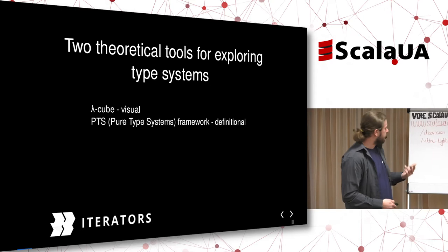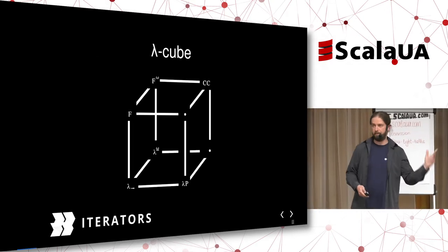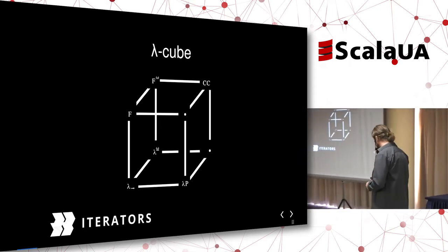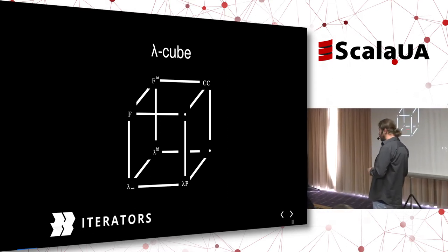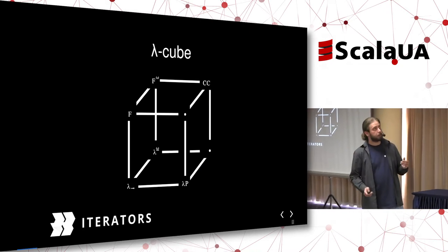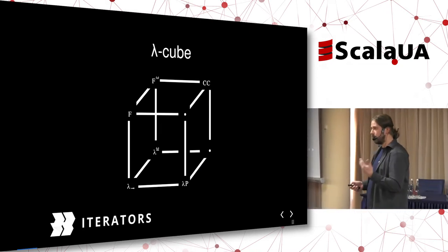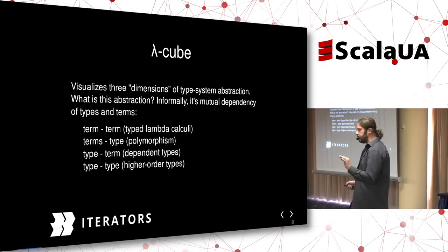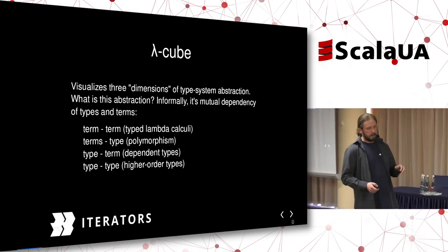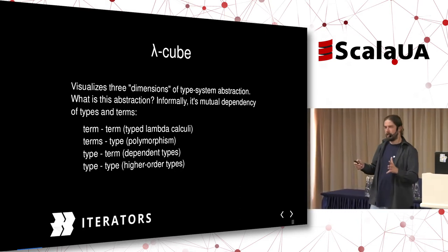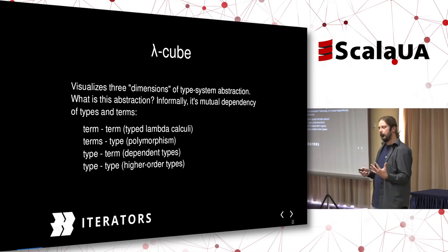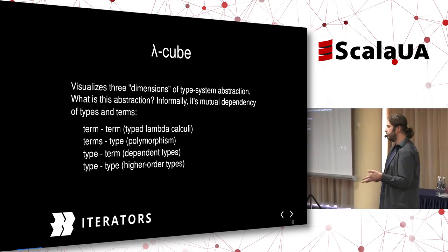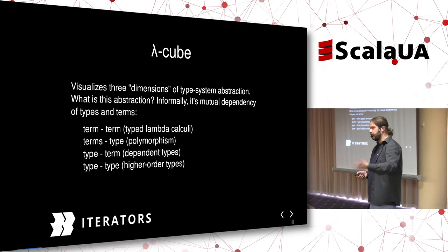The lambda cube is basically just a drawing of a cube. The idea is that if you traverse this cube in different directions, you add — or mix — some abstractions and thus form new type families. These abstractions are mutual dependencies that are allowed or disallowed between things a type system operates on: terms and types. By terms, I mean things like variables, constants, functions, function applications, and so on.